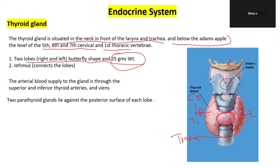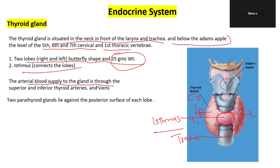Connecting the two lobes is the isthmus. The blood supply to the gland is through the superior and inferior thyroid arteries and veins.